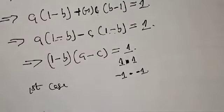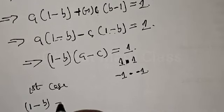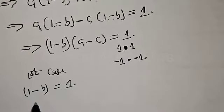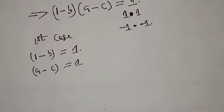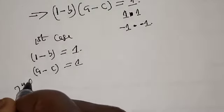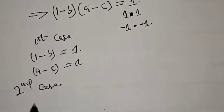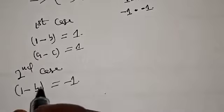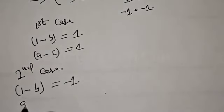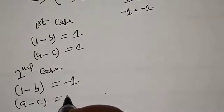First case: 1 minus B equals 1 and A minus C equals 1. Second case: 1 minus B equals minus 1 and A minus C equals minus 1.